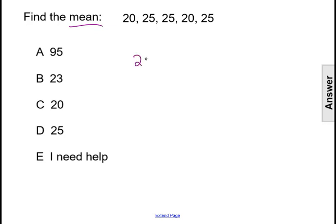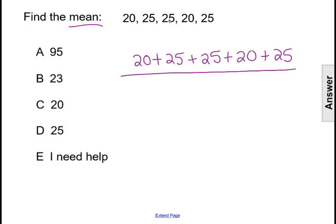So we need to find the sum of 20 plus 25 plus 25 plus 20 plus 25 and then divide it by 1, 2, 3, 4, 5 because that's how many numbers there are.